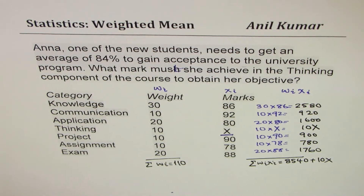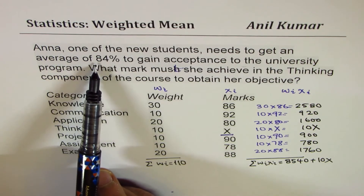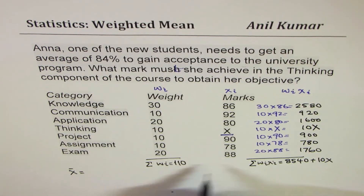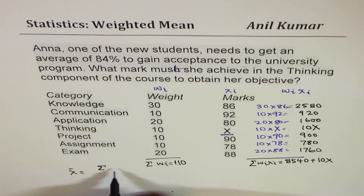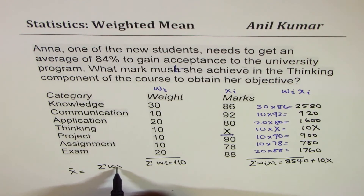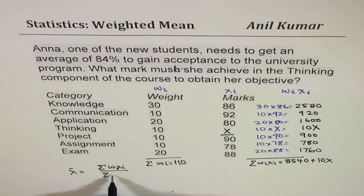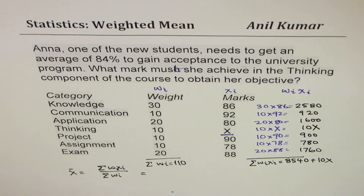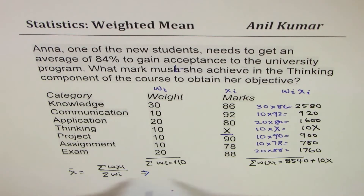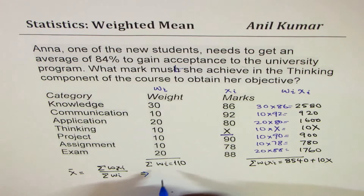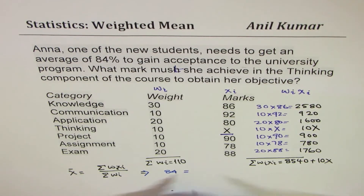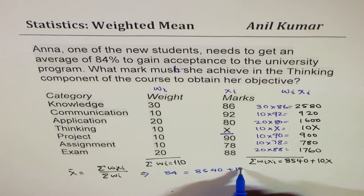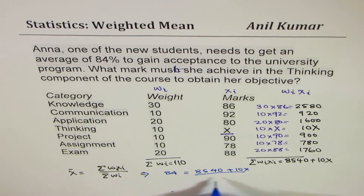Now, what are we given? We are given that the average is 84%. The weighted average formula is sigma wi·xi over sigma wi. So we can write: 84 equals 8540 plus 10x, divided by 110.